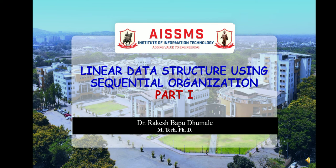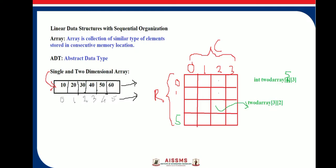In this video we will discuss the concept of linear data structures using sequential organization. A linear data structure with sequential organization consists of an array. An array is defined as a collection of similar type of elements or similar data type.